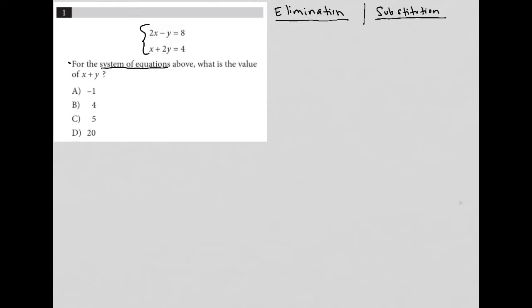Typically, substitution will be a good choice if at least one of your variables is isolated. So like we have a y isolated in the first equation, we have an x isolated in the second equation, which means in both scenarios, let's just use the substitution method.